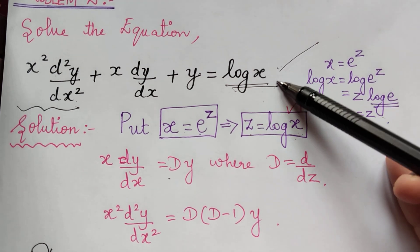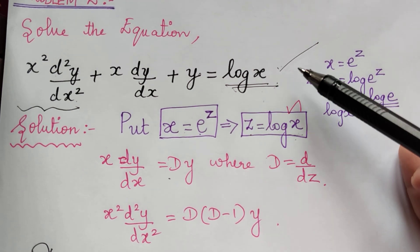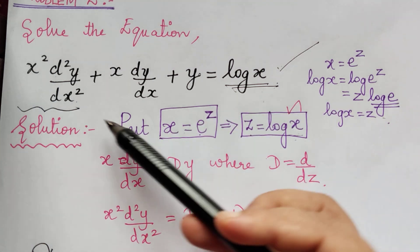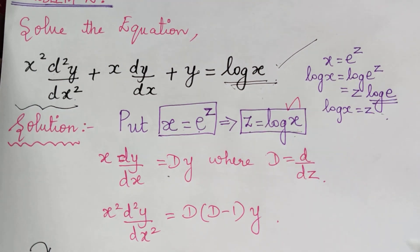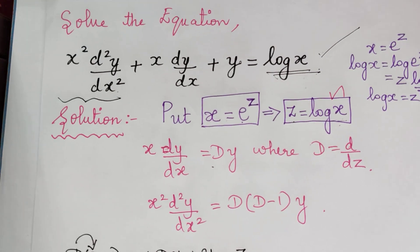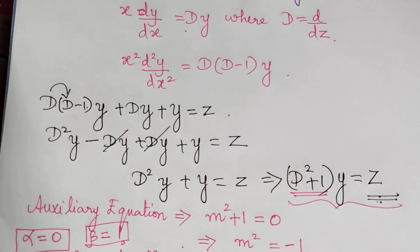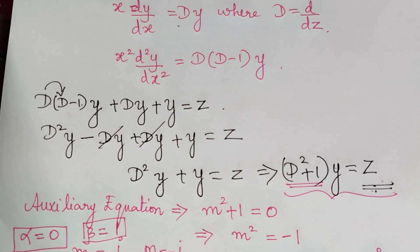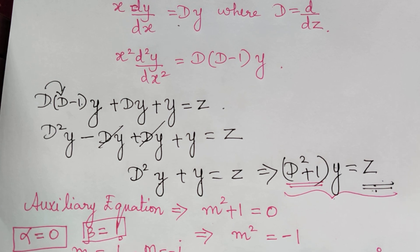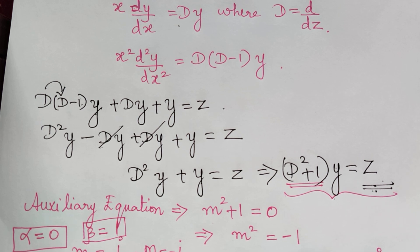To summarize: we first make the substitution x equals e to the power z to convert the equation to one with constant coefficients, then solve using the standard method learned previously. We will continue with problem 3 in the next video lecture. Thank you.